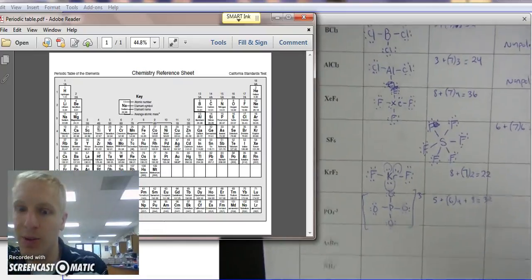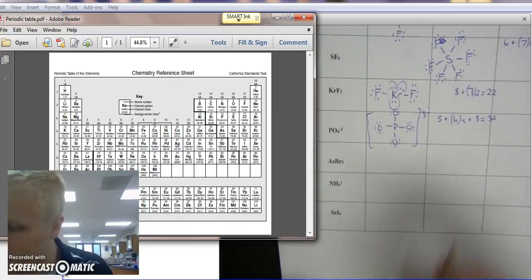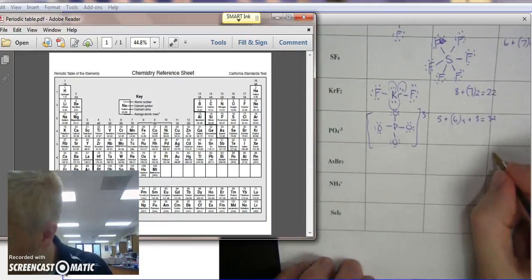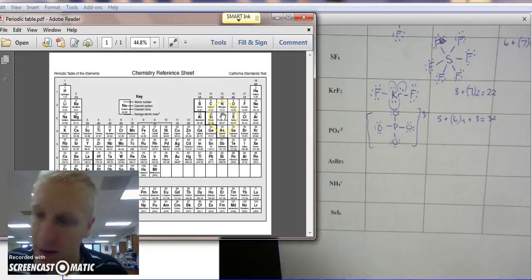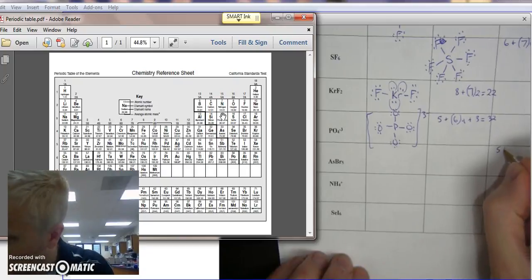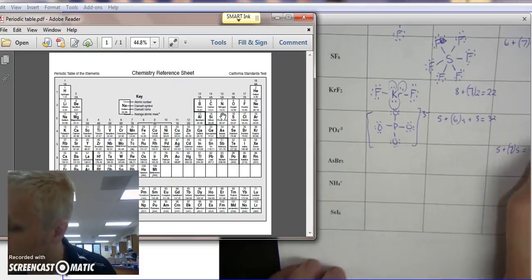All right, doing another one, let's do AsBr5. AsBr5. As is arsenic, same column as nitrogen and phosphorus, 5A. So it's 5 outer electrons, bromine's halogen, it has 7, times 5. 7 times 5 is 35, plus 5 is 40.